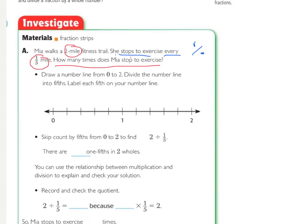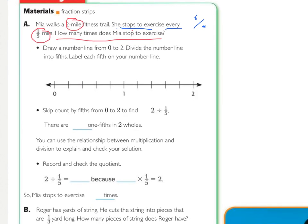So that's the number line. So the next step is to skip count by fifths from 0 to 2 to find 2 divided by 1 fifth. So by doing that they just mean that this is going to be 1 fifth, 2 fifths, 3 fifths, 4 fifths,